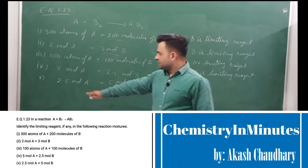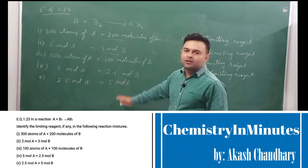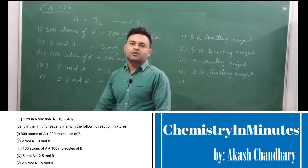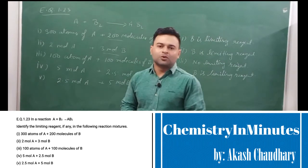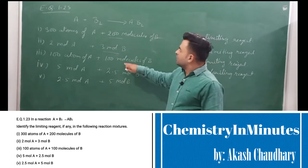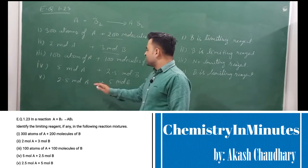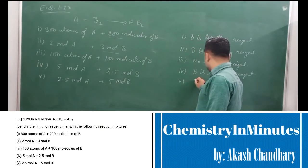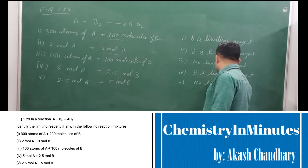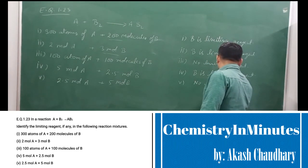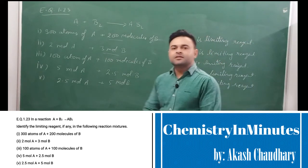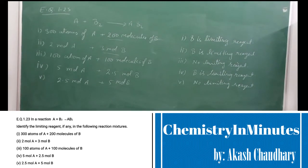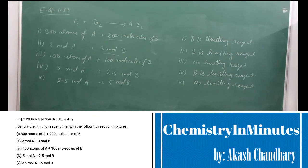In the fifth case, we have 2.5 moles of A and 5 moles of B. That means 2.5 mole atoms of A and 5 mole atoms of B, giving us 2.5 moles of B₂ molecules. So this is a stoichiometric ratio and there is no limiting reagent. This is the answer to the question.